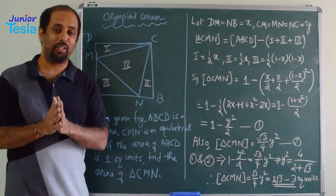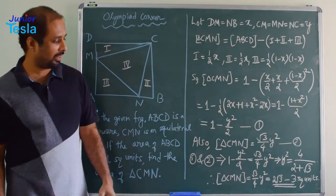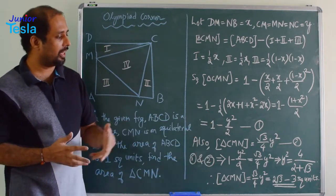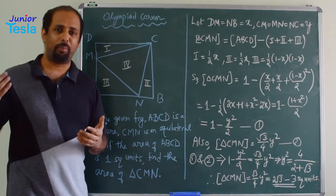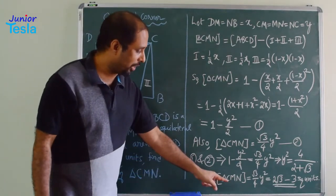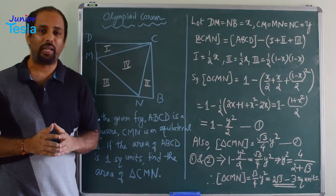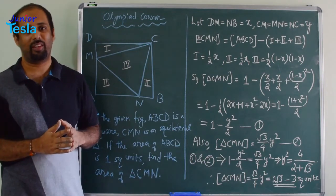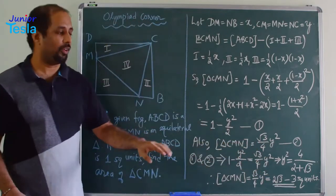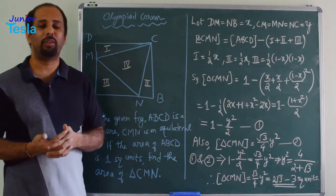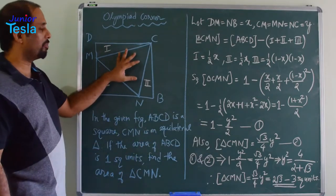We rationalize the denominator by multiplying and dividing by (2 − √3). The 4 and 4 cancel, giving √3 / (2 + √3), which simplifies to 2√3 − 3 square units. That is the area of triangle CMN.